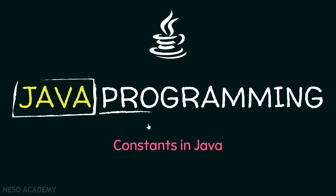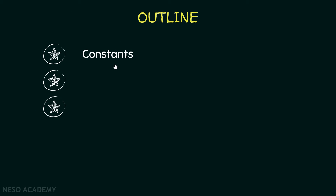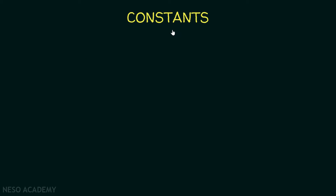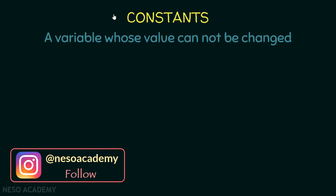Hello friends and welcome back. In this lecture we will talk about constants in Java. Here is our outline: we will talk about constants, we will see how we can initialize a constant, and finally we will see the benefits of using a constant. First of all, what is a constant? It is a variable whose value cannot be changed. As we saw previously, we can change the value of a variable by simply assigning it to a new value.